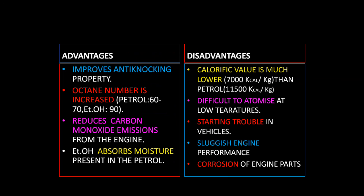The first advantage is that power alcohol, by the addition of ethyl alcohol in petrol, improves the anti-knocking property. The second advantage is that its octane number is also increased. Petrol's octane number is 60 to 70, and ethyl alcohol's octane number is 90. When both are combined to form power alcohol, the octane number is increased.